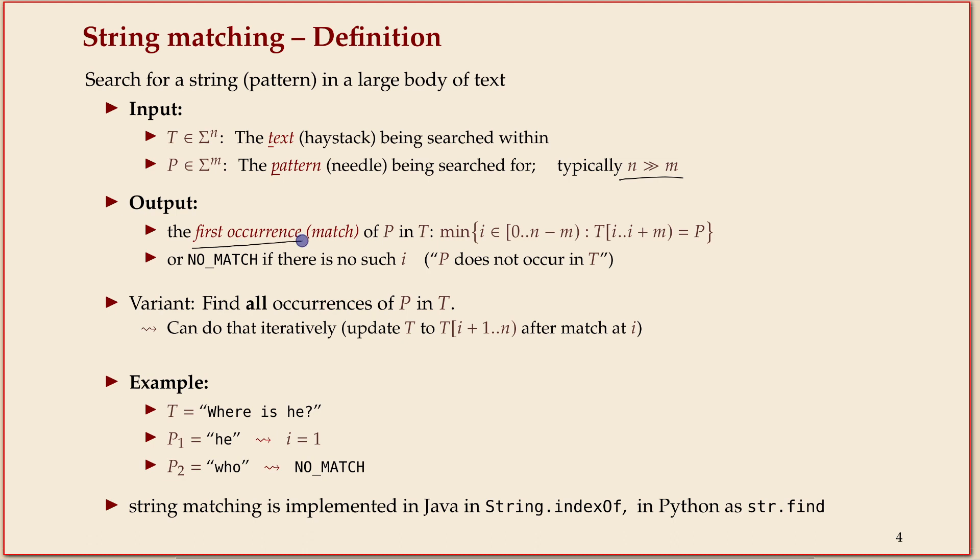Now what's the output? For this unit, we'll find the first occurrence of the pattern in the text. It can occur many more times, but finding the first one is good enough because we can call the method again starting from looking at the suffix of the text. We can find all occurrences if we want to, but sometimes it's useful to just check if it occurs at all. Formally, the output should be the smallest i in the range of indices from zero to n minus m.